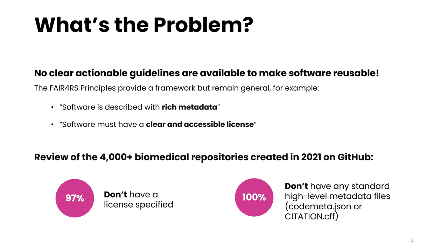It is therefore not surprising that out of the 4,000 plus biomedical related repositories created on GitHub in 2021, 97% did not have a license specified, making them technically non-reusable without potential legal consequences, and also none of them had a standard metadata file included.